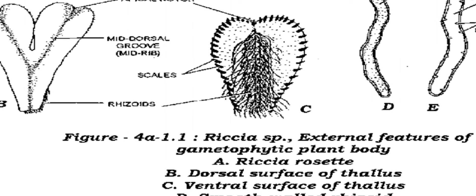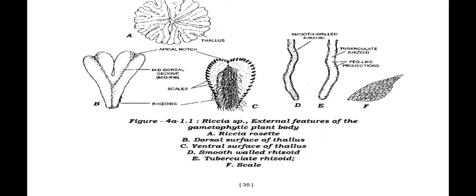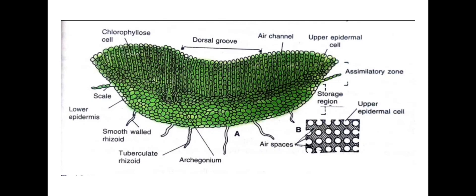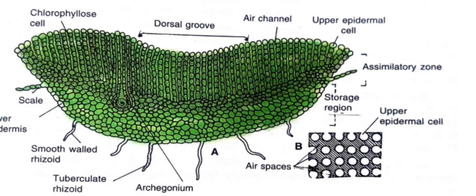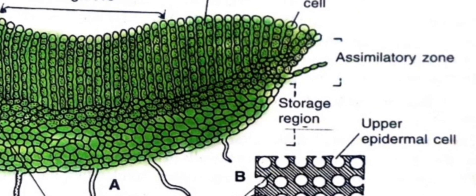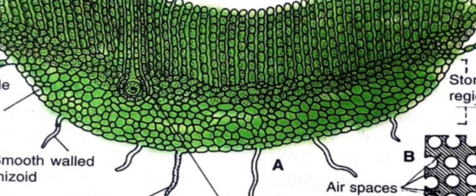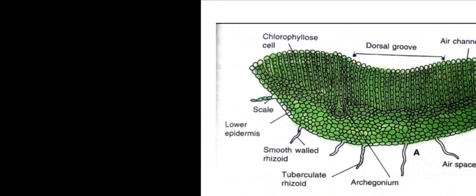The scales are present at the margins of the lobe and are of a single type — ligulate — while rhizoids are of both types: tuberculate and smooth walled. In the internal structure of the Riccia thallus, the dorsal surface has air pores and air chambers. The air chambers are spacious, followed by a prominent assimilatory zone, unlike Marchantia where the storage zone is prominent. At the ventral surface, scales and rhizoids are present, with scales of simple ligulate type usually present at the margins.